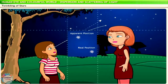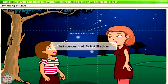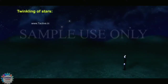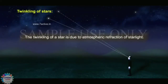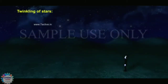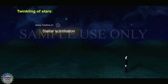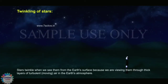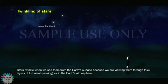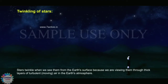In scientific terms, we refer to the twinkling of stars as astronomical scintillation. The twinkling of a star is due to atmospheric refraction of starlight. The scientific name for the twinkling of stars is stellar scintillation or astronomical scintillation. Stars twinkle when we see them from the Earth's surface because we are viewing them through thick layers of turbulent, moving air in the Earth's atmosphere.